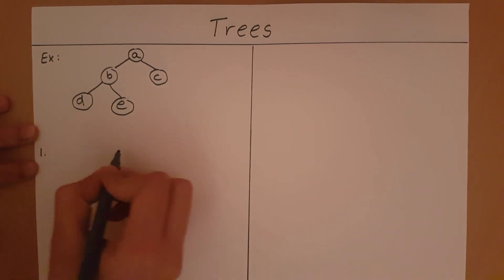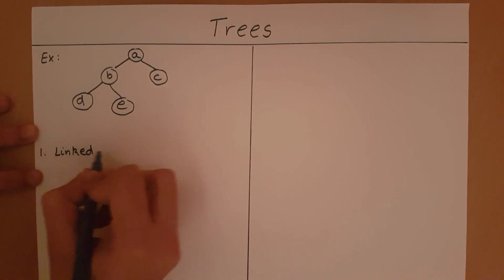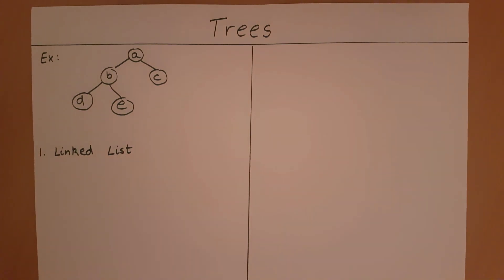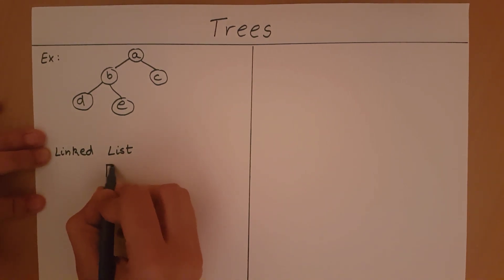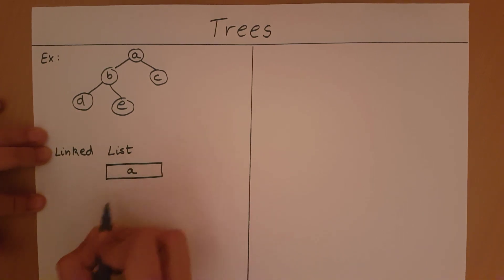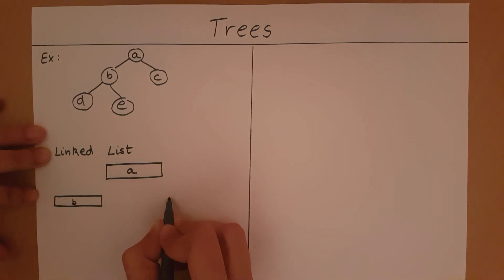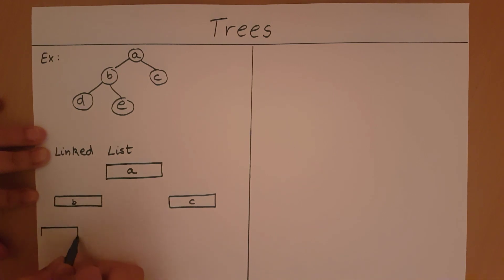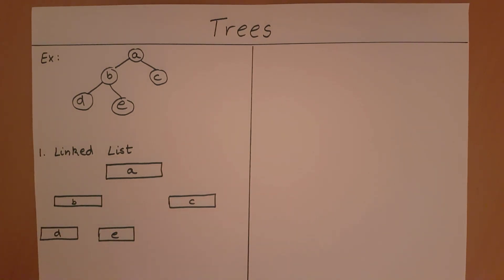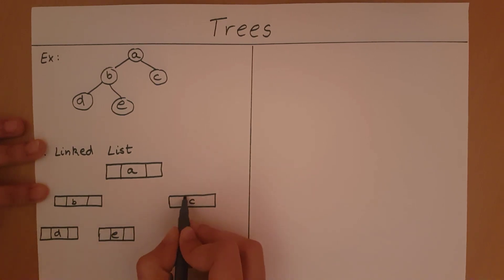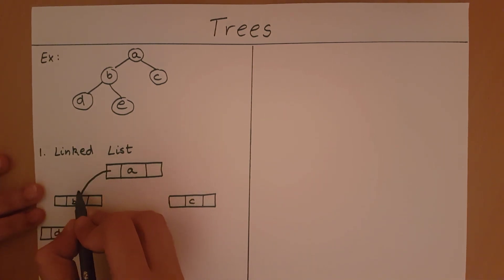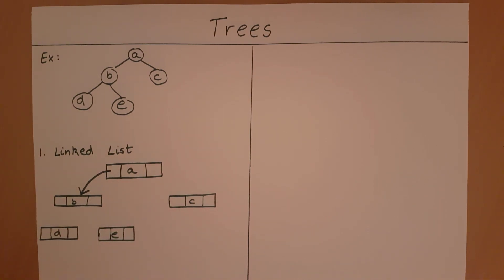There are two ways. First, let me take the implementation by linked list. In a linked list implementation of a tree, every element is going to be placed in a node. Every node has two pointers: a left pointer and a right pointer. The left pointer is going to point to the left child of the tree, and the right pointer is going to point to the right child of the tree.